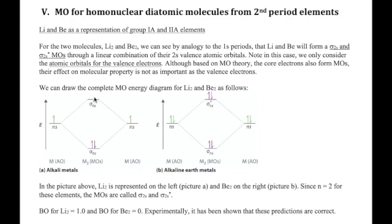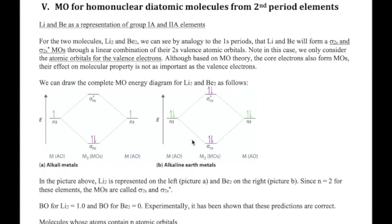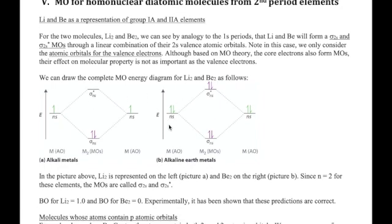Let's start by talking about elements in the first and second groups in the second period. Elements like lithium and beryllium are going to have their valence electrons in the s orbital. The MOs built from these s atomic orbitals are pretty much the same as the two MOs we saw in the period 1 elements with the 1s atomic orbital. The difference is that these MOs — sigma ns and sigma ns* where n represents the period number — are just going to be larger. So sigma 2s and sigma 2s* are larger than sigma 1s and sigma 1s*.